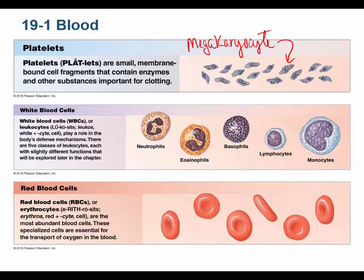Leukocytes have three granulocytes — cells with prominent granules in the cytoplasm: neutrophils, eosinophils, and basophils. There are also two agranulocytes — the prefix 'a' means without granules — which are lymphocytes and monocytes. Each leukocyte has a different job in fighting infection and, in some cases, attacking cancer cells.